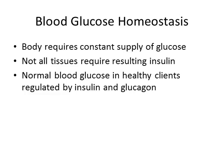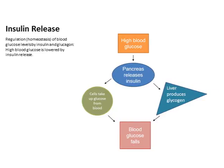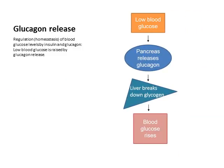This slide shows visually that when blood glucose is high, the pancreas releases insulin, cells take up that insulin, and blood glucose falls. The next slide shows that with low blood glucose, the pancreas releases glucagon, the liver breaks down glycogen, and blood glucose rises.